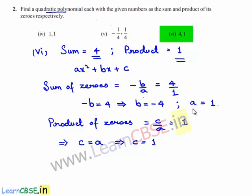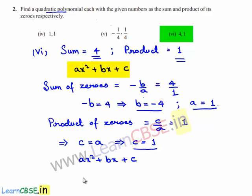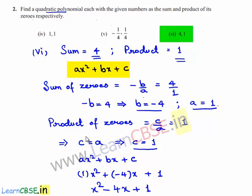Finally, we got the value of A as 1, the value of B as minus 4, and the value of C as 1. Therefore, substituting the values of A, B, and C in Ax² + Bx + C, we will be getting x² minus 4x plus 1. Hence, the required quadratic polynomial is x² - 4x + 1.